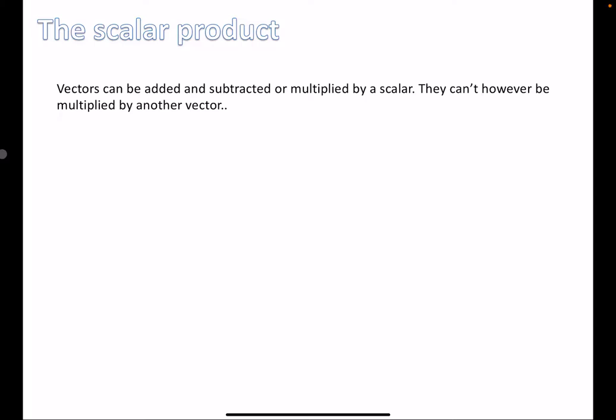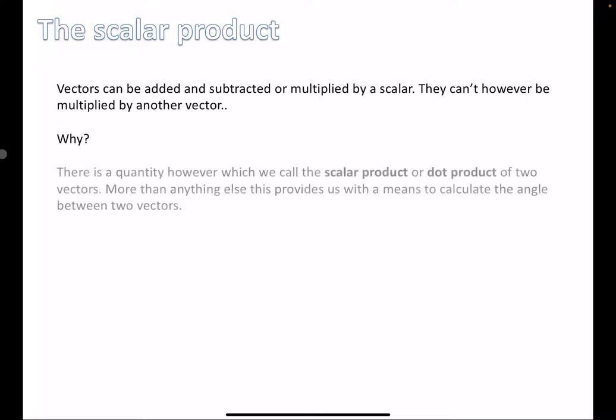We've looked at adding and subtracting vectors, and multiplying them by a scalar, but we haven't looked at multiplying them by each other. It's not going to give us anything useful if we do. However, we have an alternative called the scalar product, or the dot product.